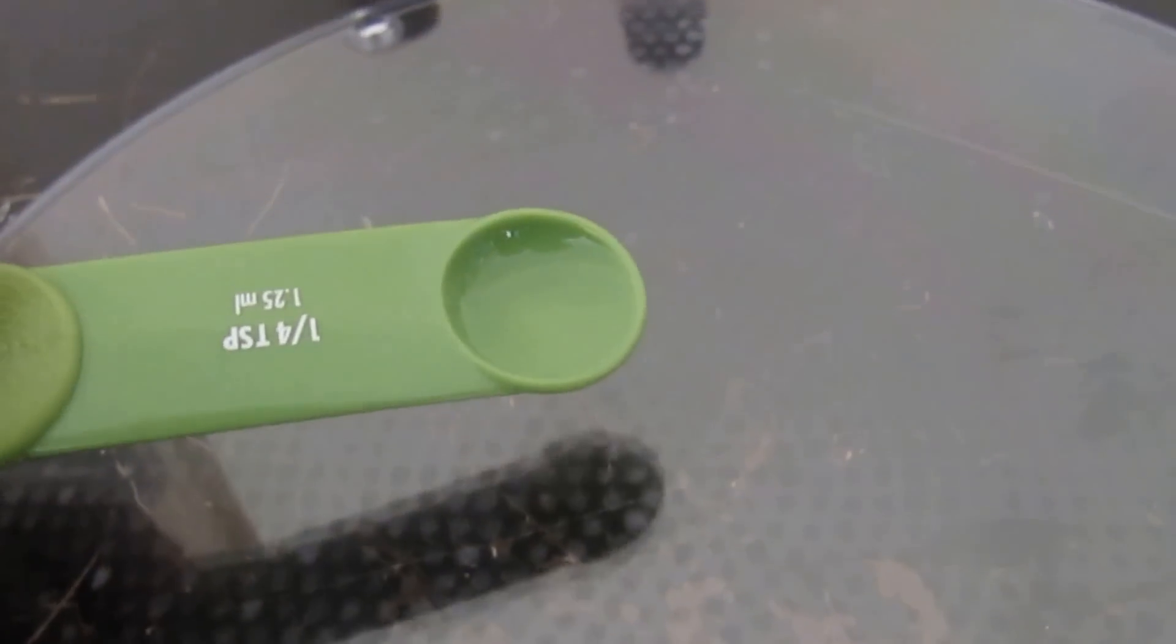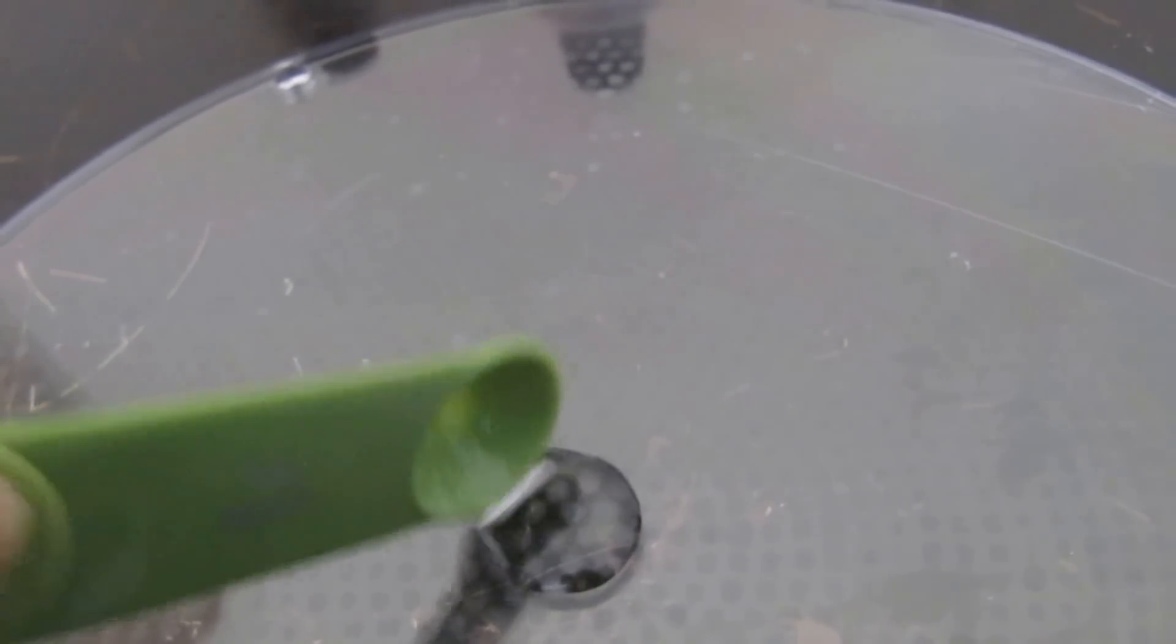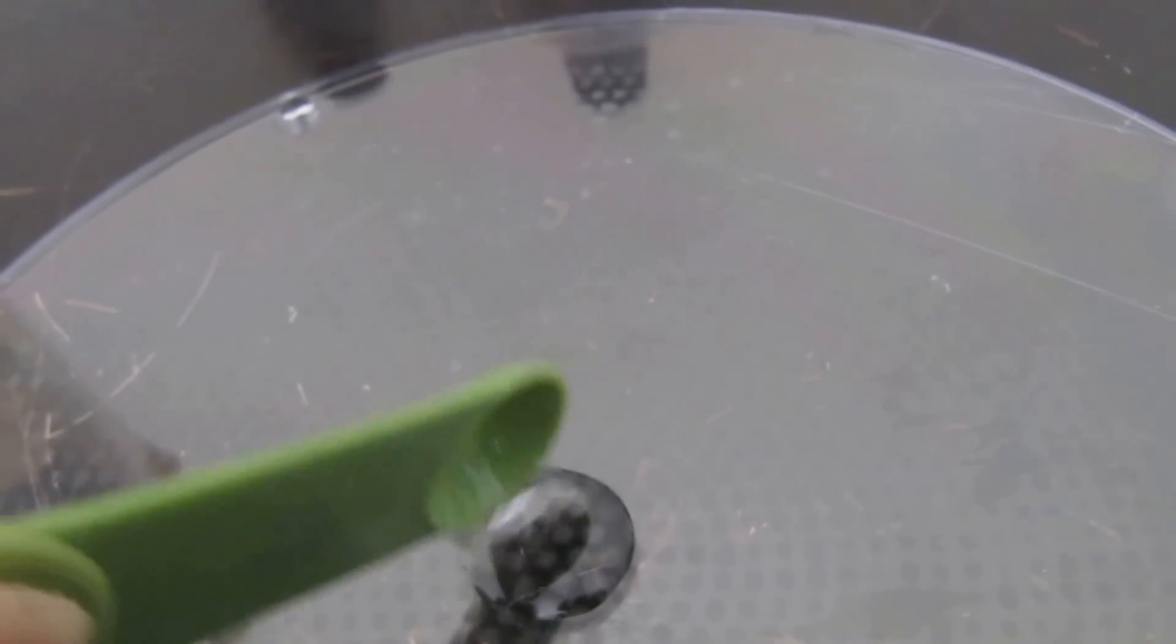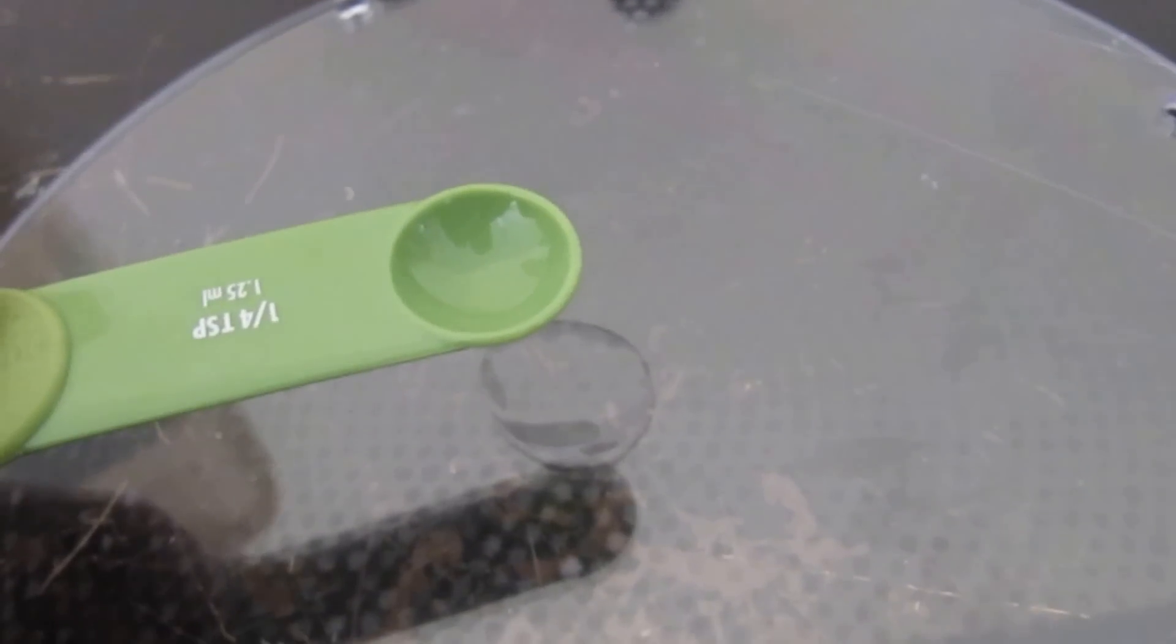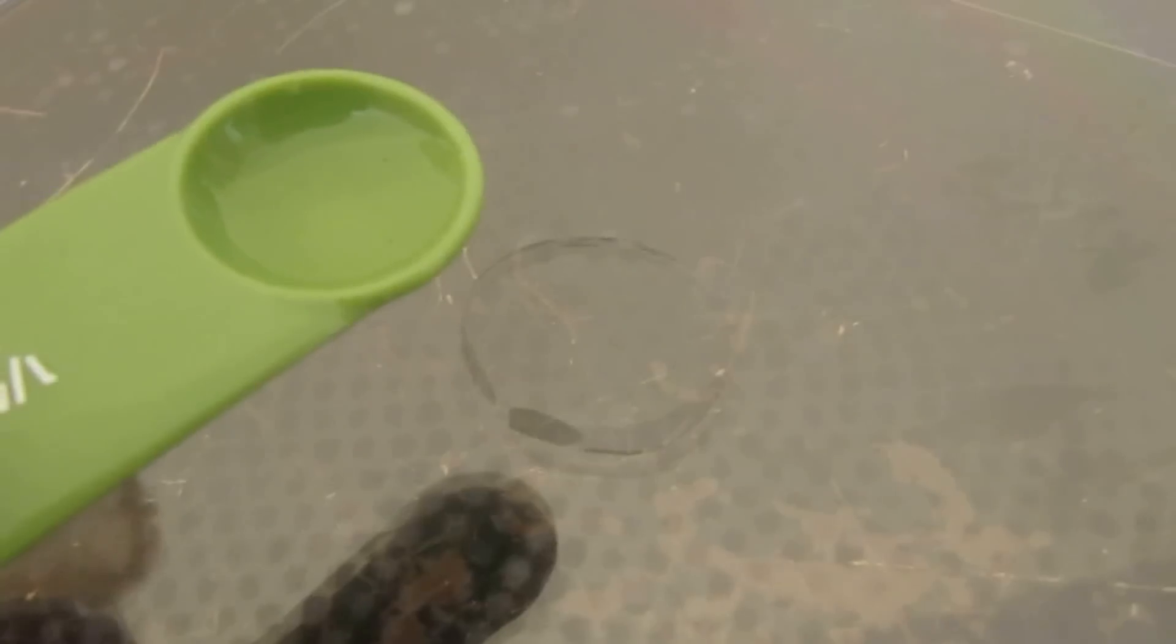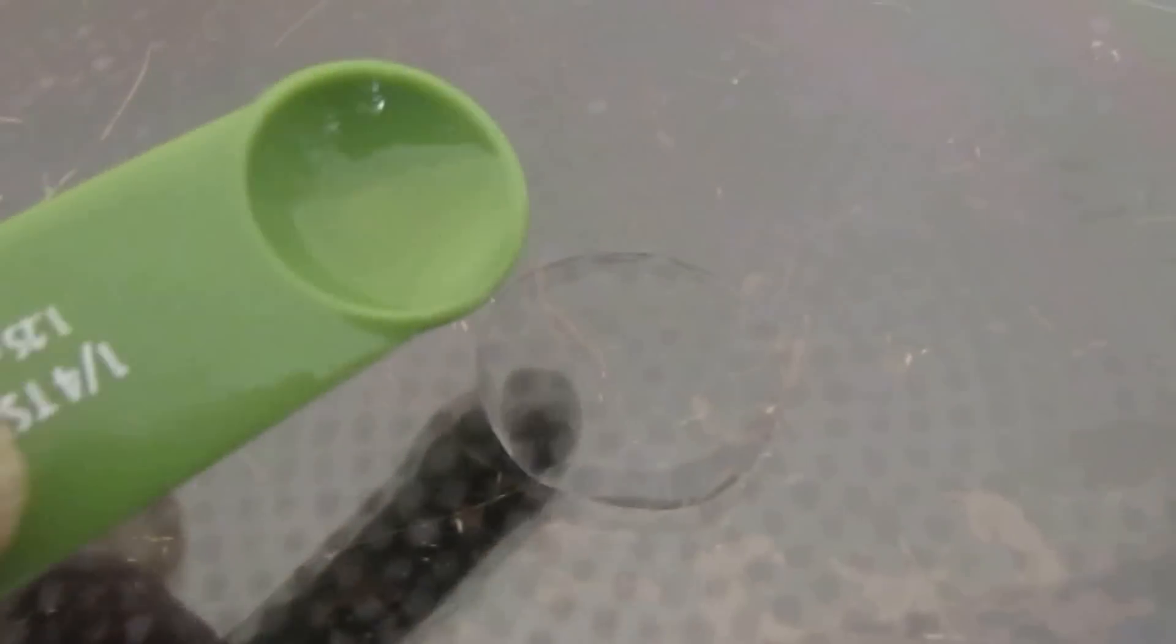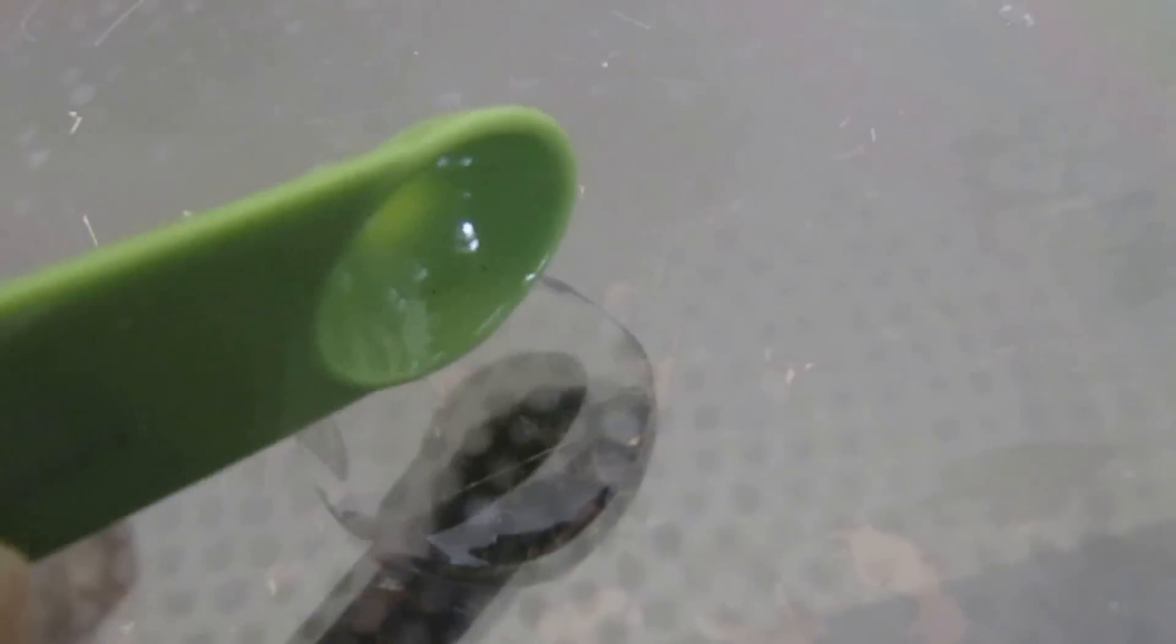So here's a quarter teaspoon of run-of-the-mill mineral oil. Now we're going to use about an eighth of a teaspoon of oleic acid, or you could use olive oil. Here's your eighth of a teaspoon of oleic acid. So I'm going to mix that in there a bit. Okay, eighth of a teaspoon of oleic acid.